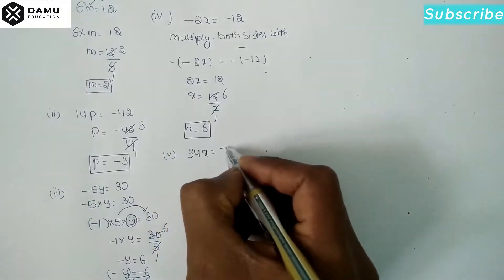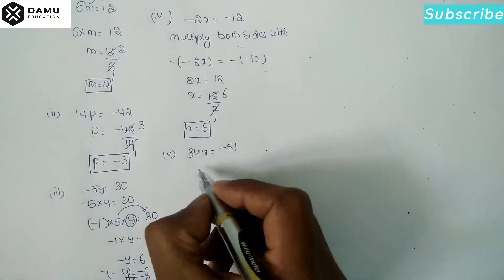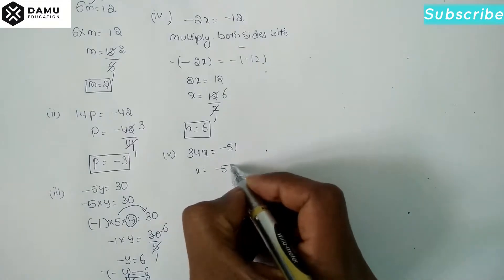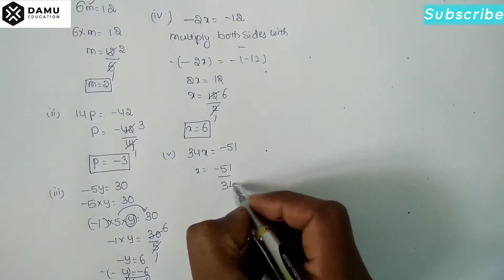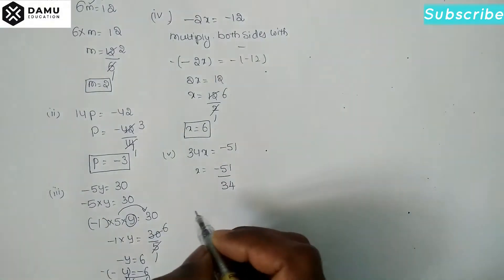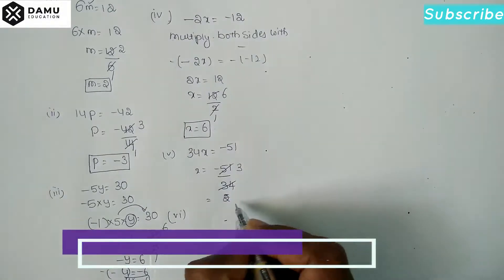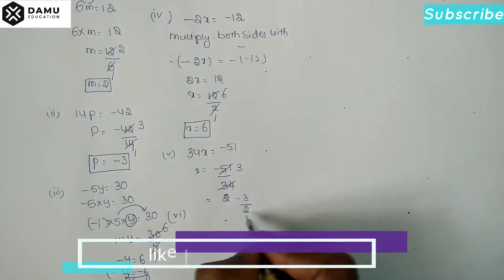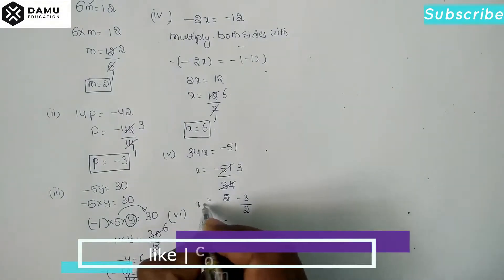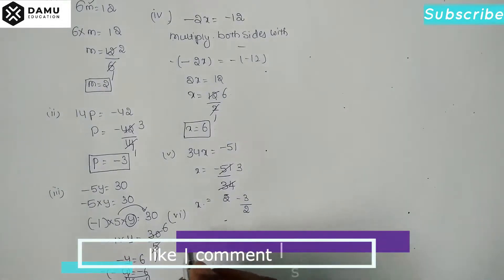The fifth one: 34x = -51. Then x = -51/34. Simplifying by dividing by 17, x = -3/2.